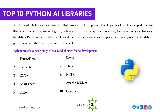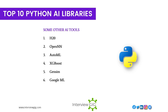Top 10 Python Artificial Intelligence Libraries. Artificial Intelligence is a broad field that involves the development of intelligent machines that can perform tasks that typically require human intelligence, such as visual perception, speech recognition, decision-making, and language translation. Python is used in AI to develop and train machine learning and deep learning models, as well as for data pre-processing, feature extraction, and deployment. Popular libraries include TensorFlow, PyTorch, CNTK, Scikit-learn, Caffe, Keras, Fiano, NLTK, Apache MXNet, and OpenCV. Other AI tools include H2O, OpenNN, AutoML, XGBoost, Gensim, and GoogleML.